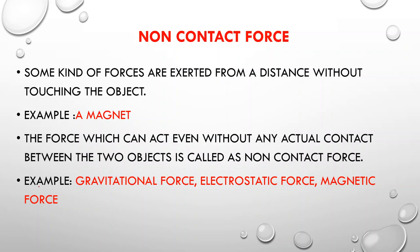The force which acts even without any actual contact between two objects is called non-contact force. Non-contact forces are of three types: gravitational force, electrostatic force, and magnetic force. Magnetic force — the magnet attracts nails or pins made of iron from a distance, and also attracts another magnet when unlike poles are brought together, while same poles repel each other.